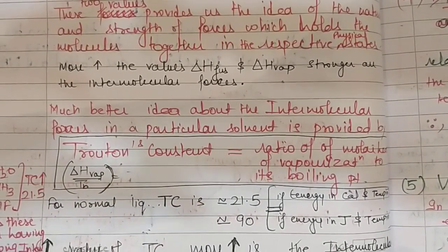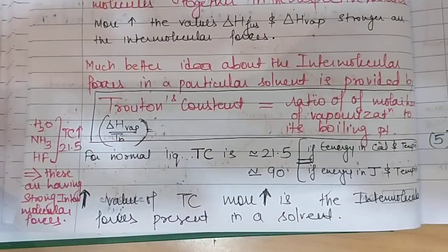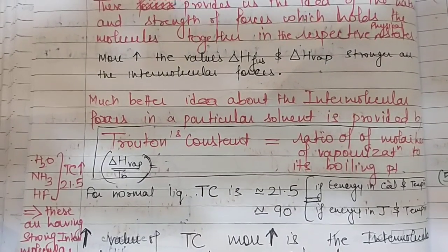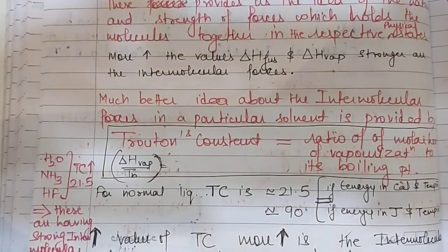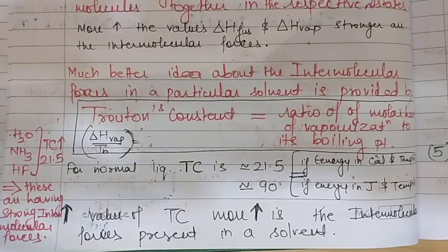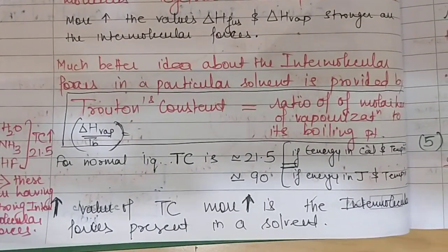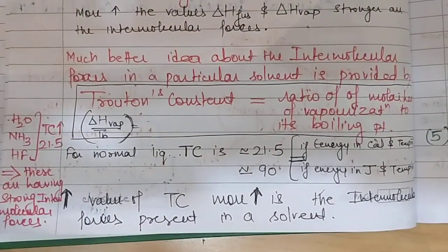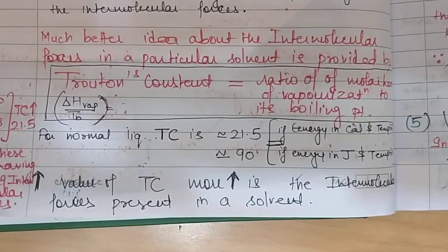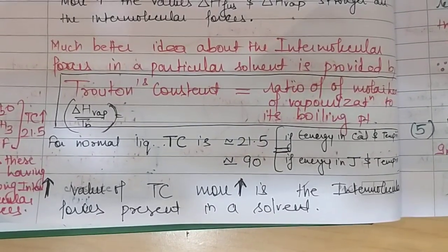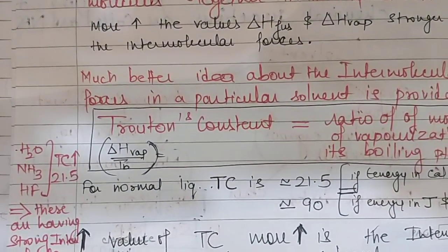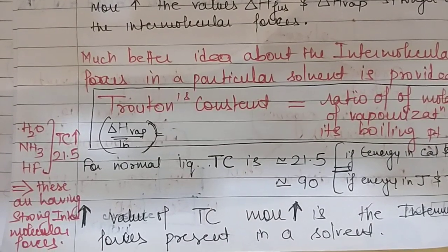A better idea about intermolecular forces in a particular solvent is provided by a quantity called Trouton's constant. Trouton's constant is the ratio of molar heat of vaporization to its boiling point — that is, ΔH_vap divided by T_b. For normal liquids, Trouton's constant is in the range of 21.5 when energy is in calories and temperature is in Kelvin, and around 90 when energy is in joules. Higher the value of Trouton's constant, more are the intermolecular forces. Water, ammonia, and HF all have higher Trouton's constant values than normal liquids.